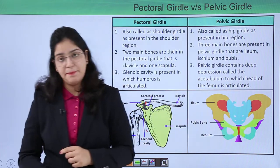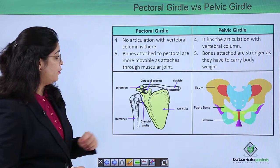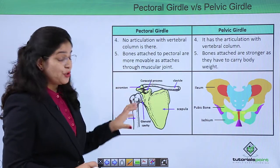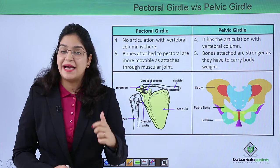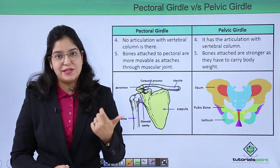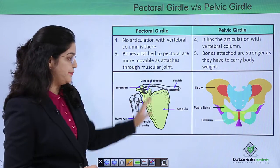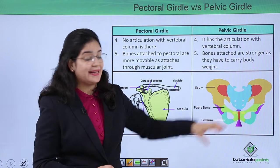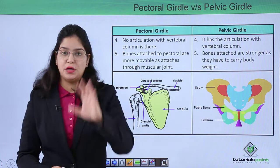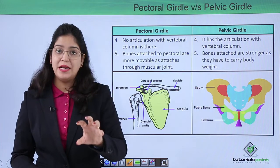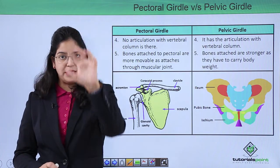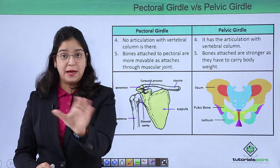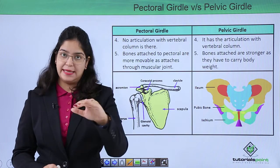The pectoral girdle is not directly attached to the vertebral column, whereas the pelvic girdle is directly connected to the vertebral column — you can see that the vertebral column is directly connected to the hip region.